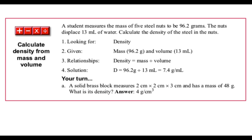Here's an example from the book. A student measures the mass of five steel nuts to be 96.2 grams and they displace 13 milliliters of water. Calculate the density. They gave us the mass, they give us the volume. So there's the mass, 96.2 grams, divided by the volume of 13 milliliters and it gives me the answer of 7.4 grams per milliliter. Important to have the grams per milliliter because that is what density should always have. It should always have a mass per volume.